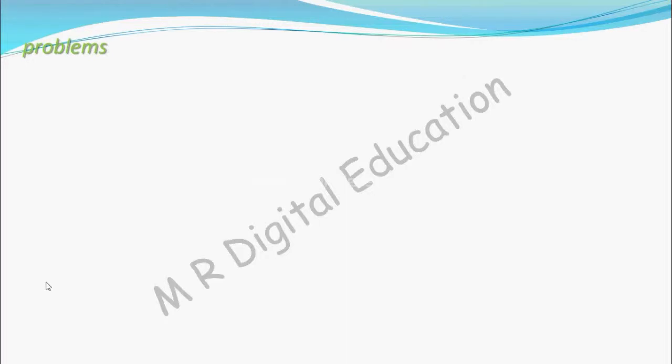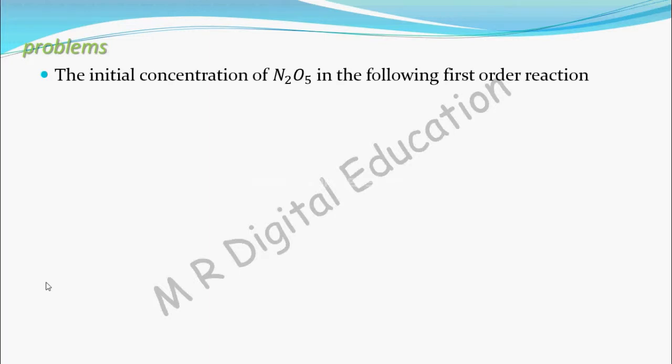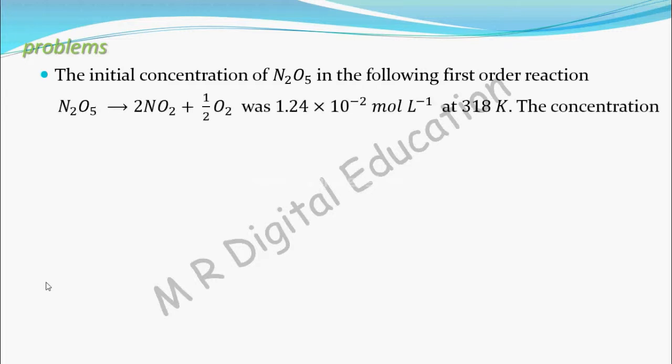Let's see a problem on first order reaction. The initial concentration of N2O5 in the following first order reaction, N2O5 gives NO2 and half O2, was 1.24 × 10^-2 mol per liter at 318 Kelvin.